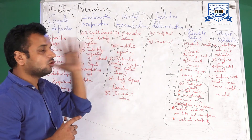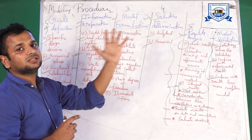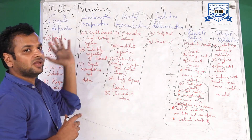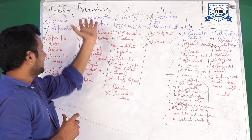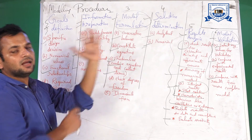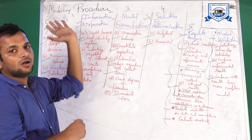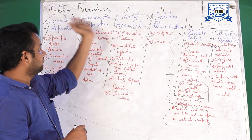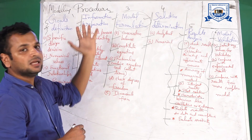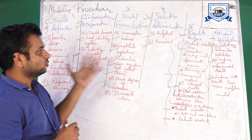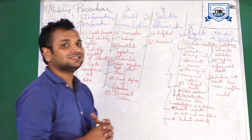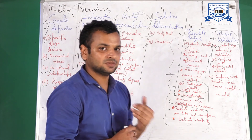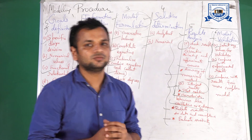So these are the six steps involved in the modeling procedure. You need to follow these six steps when defining any model or modeling procedure. Thank you.